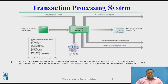In transaction processing systems, operational managers need systems that keep track of the elementary activities and transactions of the organization, such as sales receipts, cash deposits, payroll, credit decisions, and the flow of material in a factory. Transaction processing systems provide this kind of information.